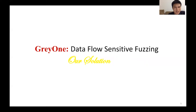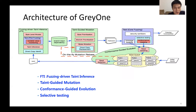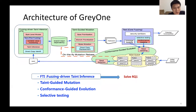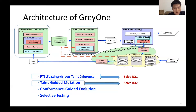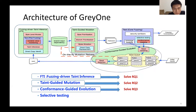To solve the above questions, we design GREYONE. Let's look at the architecture of GREYONE. GREYONE is also evolution-based fuzzing, but dataflow analysis is throughout the whole evolutionary process. At first, GREYONE infers fuzzing-driven taint information by leveraging feedback-based fuzzing to answer question 1. Next, it performs data dependence-guided prioritization and intelligent mutation to answer question 2. GREYONE also incorporates useful dataflow features to guide evolution, exploring hard-to-reach branches more efficiently, to answer question 3. Lastly, we design selective testing to perform performance optimization.